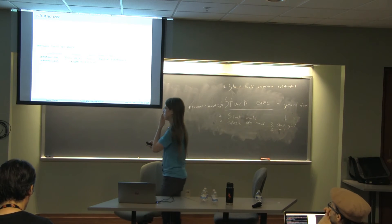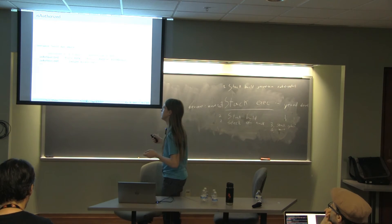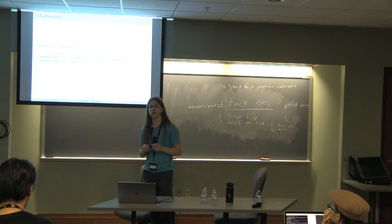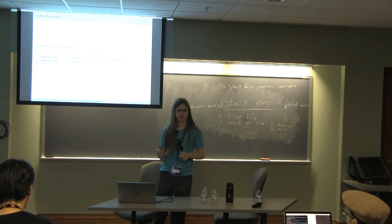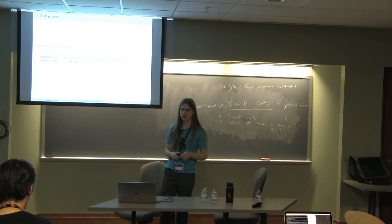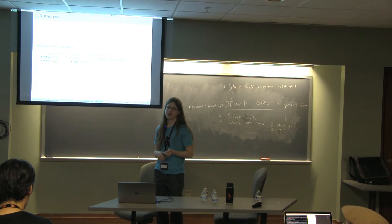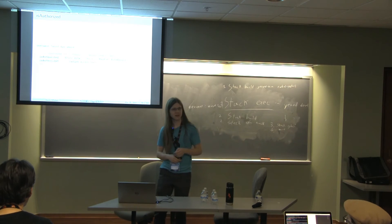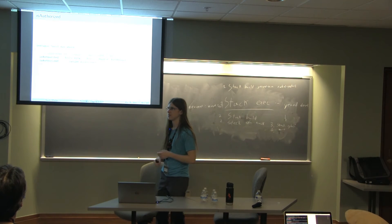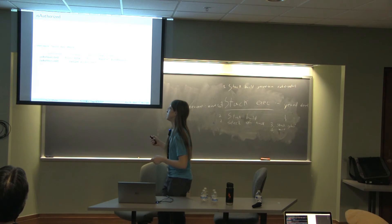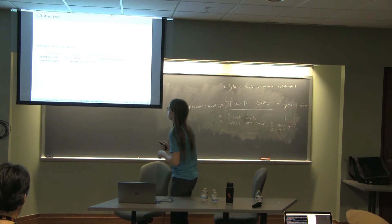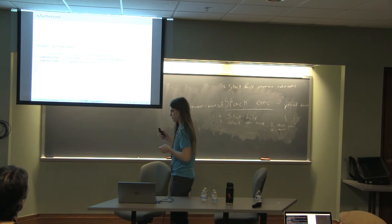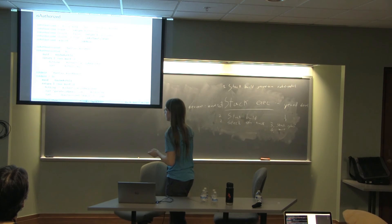isAuthorized is in the Handler monad and returns an AuthResult, which is either AuthenticationRequired, Authorized, or Unauthorized. It takes a route and a boolean - the boolean is whether it's a write request or not. By default write requests are like POST, PUT, DELETE - anything except GET or OPTIONS. So if it's true it's a write request, if false it's a non-write request, and you override this function to tell Yesod whether a route is authorized.